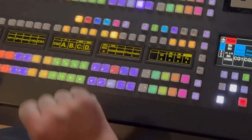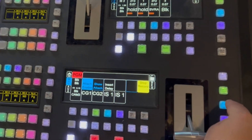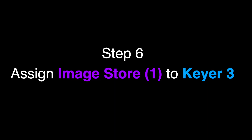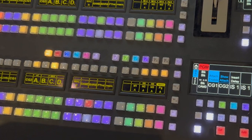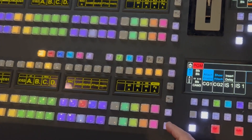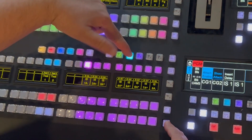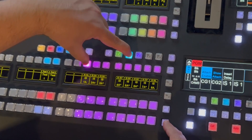Make sure that the macro button you selected is blinking. The first step is to turn on Key 3. Now it is time to assign the image store to Key 3. The first thing you need to do is press and hold Second Shift and Key 3.